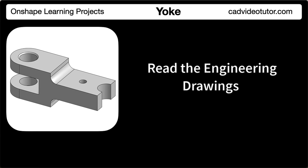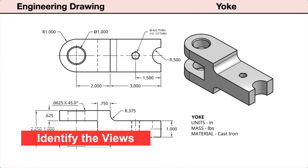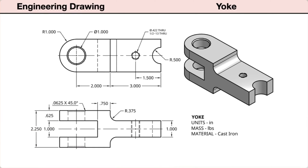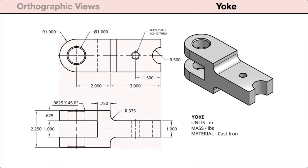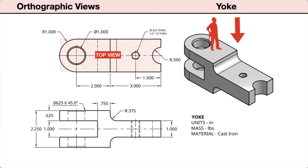In this segment, we'll read the engineering drawing for this yoke. Let's start by identifying the views provided in the drawings. First, there is an isometric view showing the yoke as a three-dimensional pictorial. Next, two orthographic views. On the bottom, a front view. Projected above the front view, a top view.